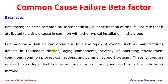Common cause failures can occur due to many types of events such as manufacturing defects in redundant devices, aging components, severity of operating environment conditions, common process connections, and common support systems. These failures are referred to as dependent failures and are most commonly modeled using the beta factor method. This factor must be taken into consideration during SIL and probability of failure on demand calculations. Where there is a need to use common instruments, the beta factor will be high and probability of failure on demand increases. The sharing of instrumentation should be avoided, but proof testing remains a critical requirement for safety instrumented systems.